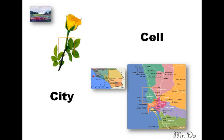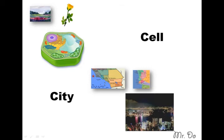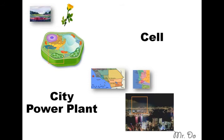Let's zoom in some more. Here's our cell structure — same thing as a city. Inside a city, what provides the energy for the city is a power plant. Just like a cell, the thing that provides energy for the cell — in this case for the plant — is a chloroplast.